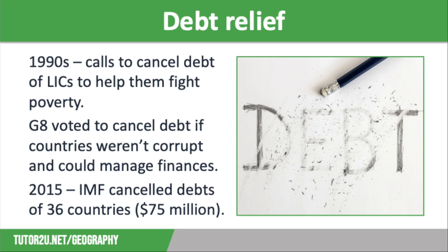In 2005, the G8, which stands for the Group of Eight, met to discuss the issue of global debt. The G8 consists of leaders from Canada, France, Germany, Italy, Japan, Russia, the UK and the USA. They voted to cancel many of the debts providing LICs could prove three things.